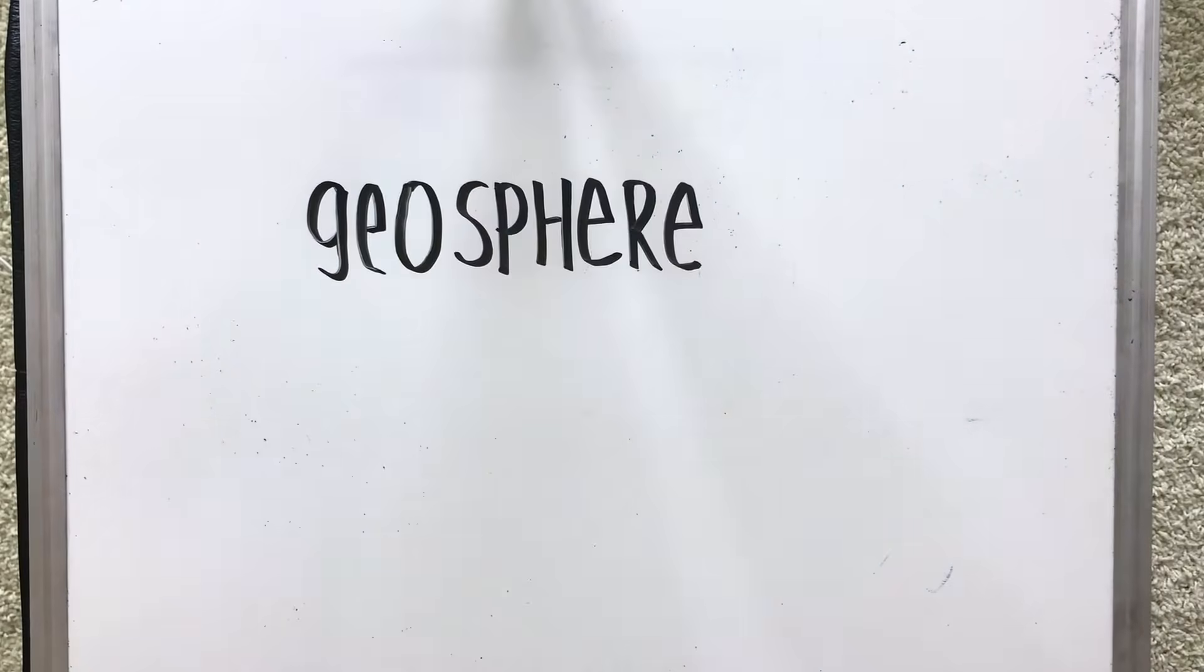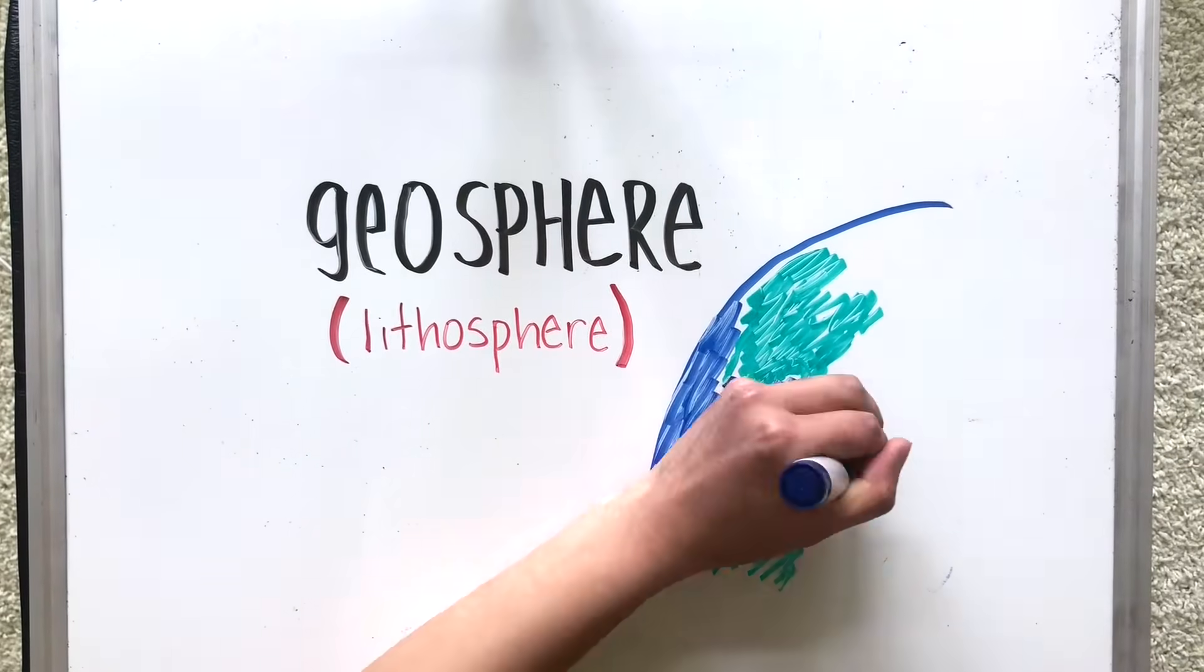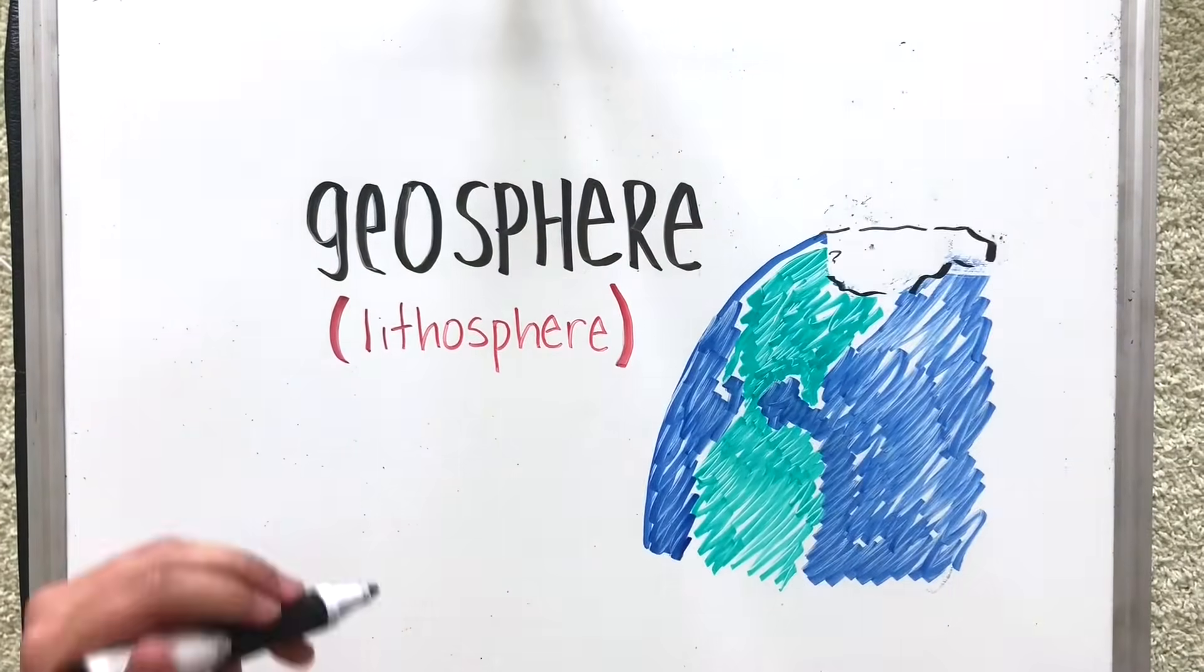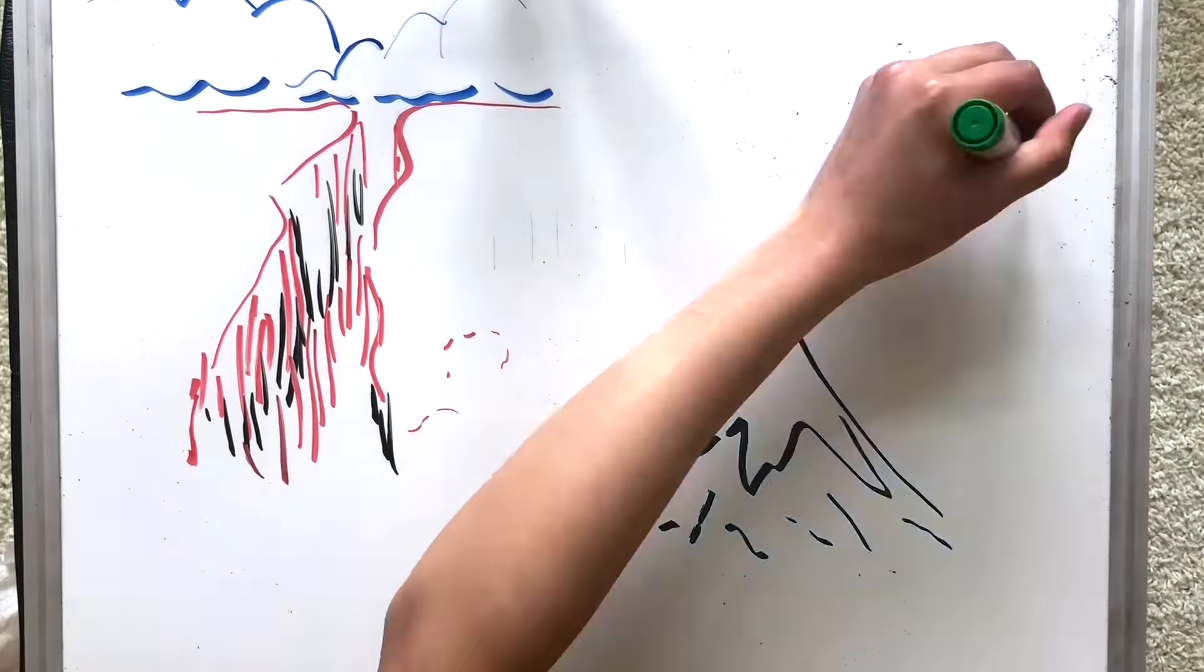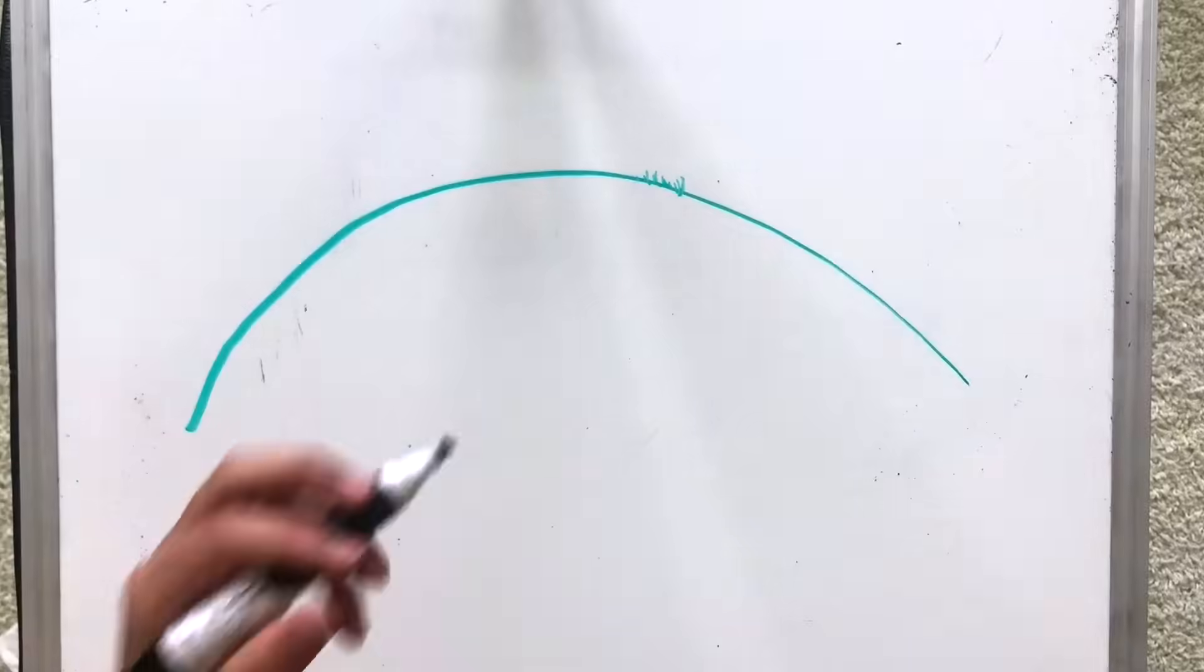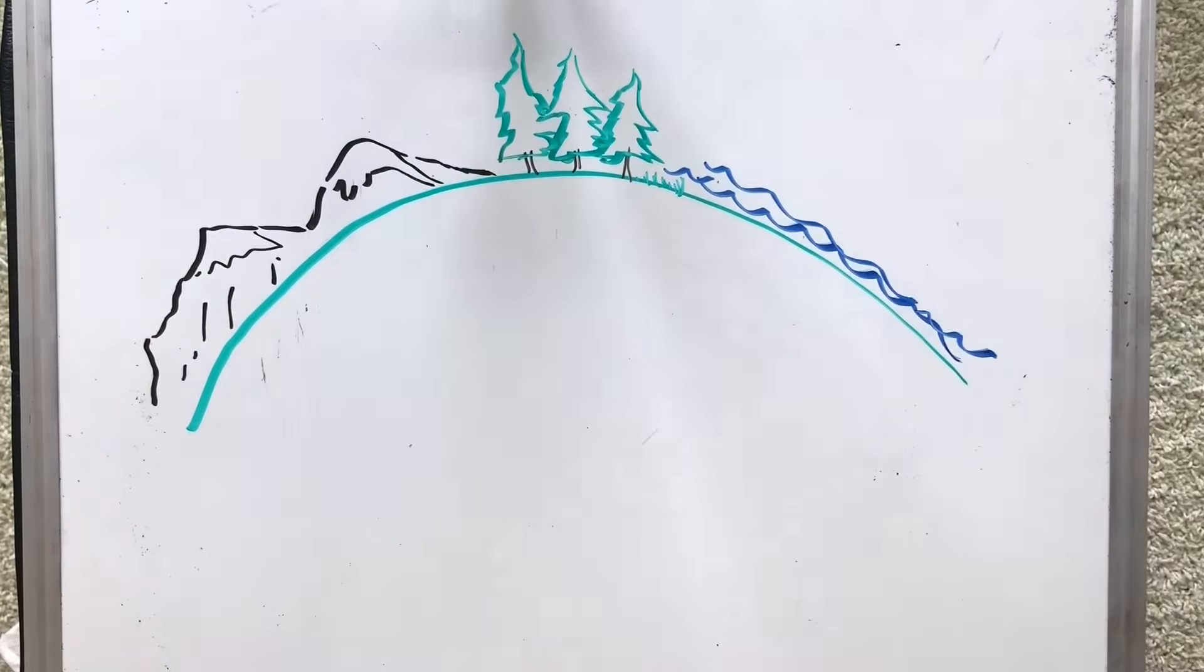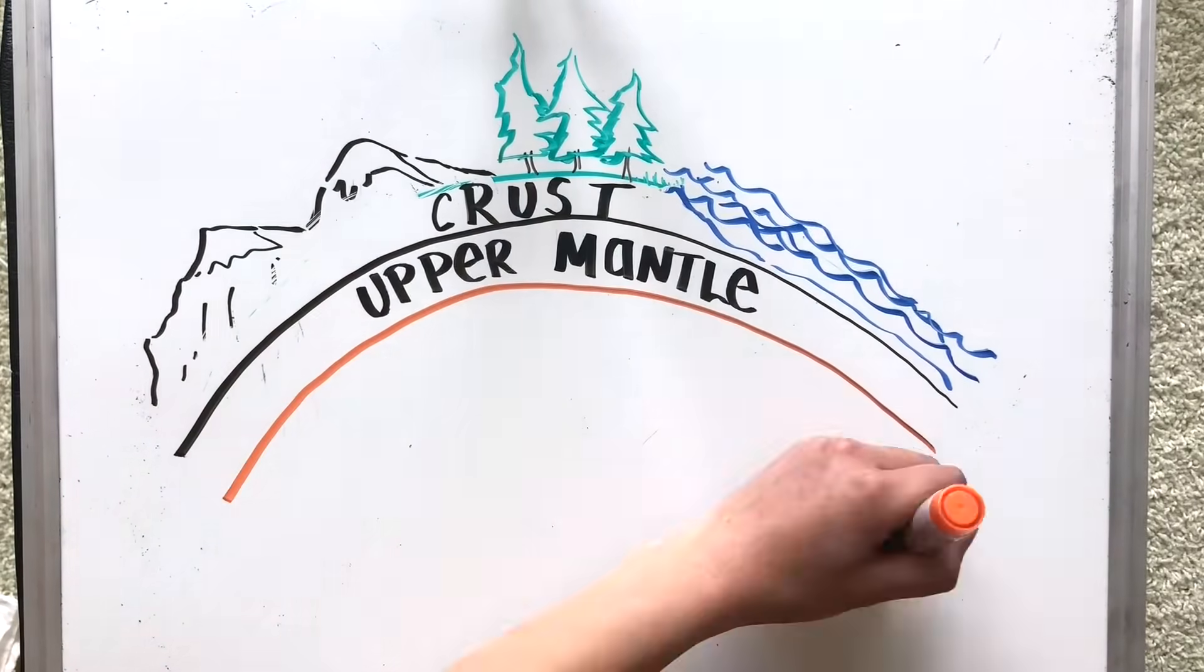Our second main system is the geosphere, sometimes called the lithosphere. This contains all the land on Earth, from the mountains, rocks, canyons, plains, and even the ocean floor making up the planet's surface, to the semi-solid interior of the mantle, and to the metal core of our Earth. Our entire planet essentially is part of the geosphere, minus the water and air.